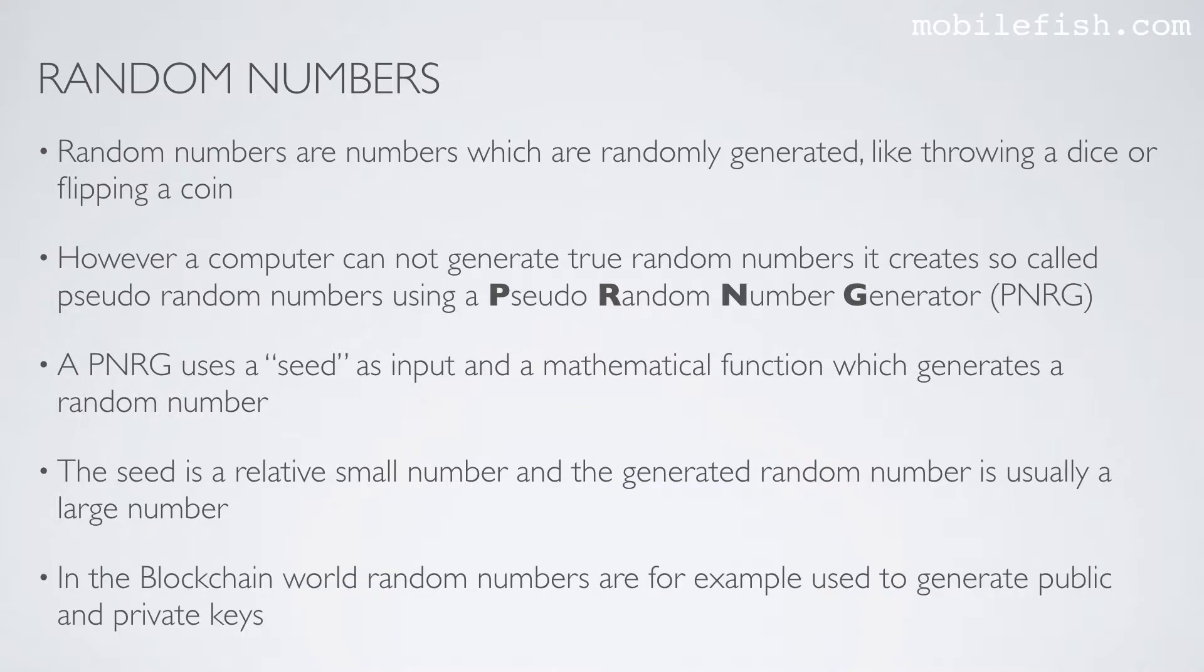In the blockchain world, random numbers are for example used to generate public and private keys. In coming videos, I will explain more about public and private keys.